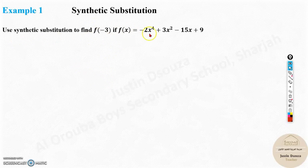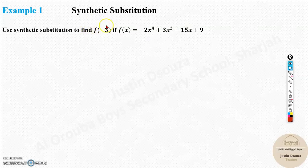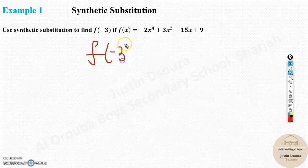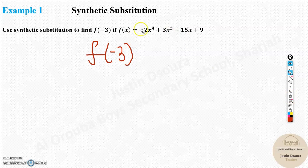We need to find the remainder using synthetic substitution. They have given f(-3), and the function is given. So you can solve it directly by substituting minus 3 instead of x — you substitute minus 3 to the whole power 4, and everything else remains the same.